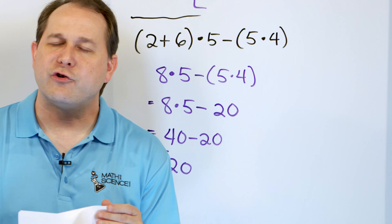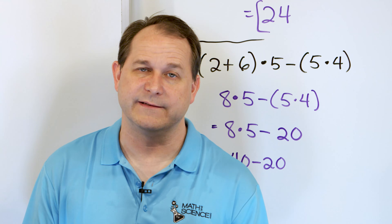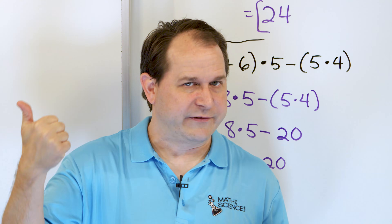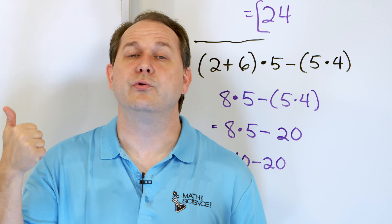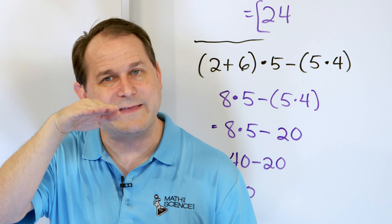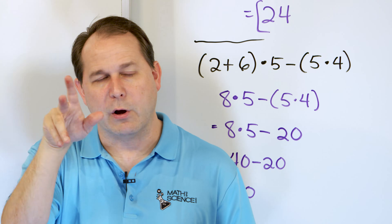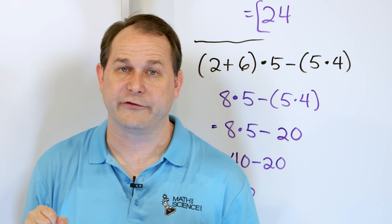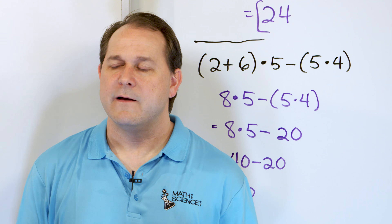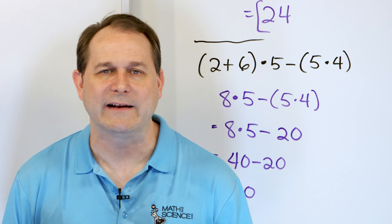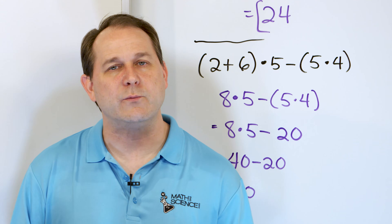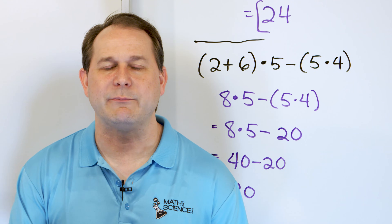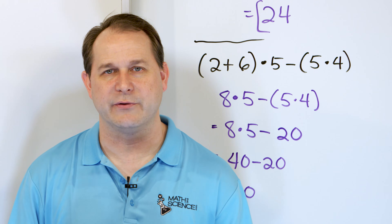So again, incredibly important — we have several lessons on this. You always do parentheses first, then multiply and divide, which are at the same level. Multiply is not higher than divide — they're at the same level. Then you do add and subtract, which are also at the same level. Practice every one of these problems, and follow me on to part 2 where we'll get a little more practice with order of operations. It really is one of the most central things we're going to learn, so take your time and make sure you understand.